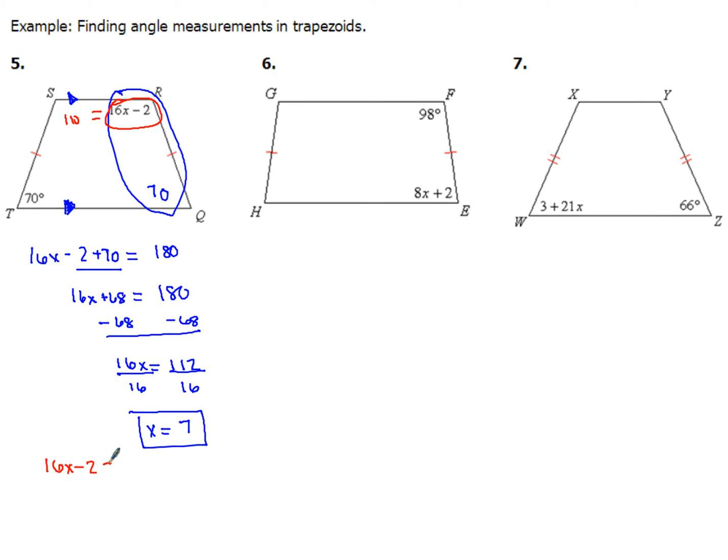16x minus 2 equals 110, and then you'll have 16x equals 112, in which case you'd get x equals 7 again. So either way you would get 7 for the value of x.